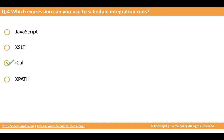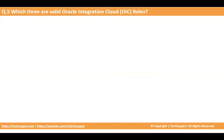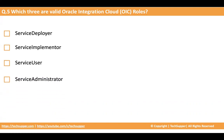The fifth question: which three are valid Oracle integration cloud roles? When you create an Oracle integration instance, various application roles are provisioned along with the instance, and depending on the type of user you assign the appropriate roles. The options are: service deployer, service implementer, service user, and service administrator. If you don't know, go to the IDCS console of OCI, open your instance, and find the valid application roles there.